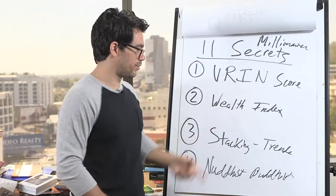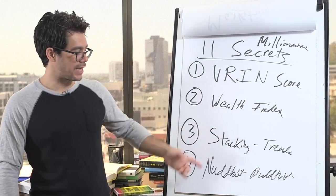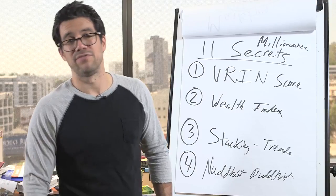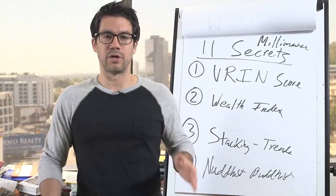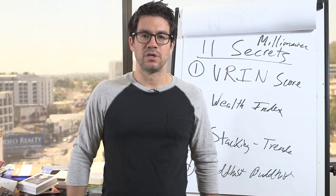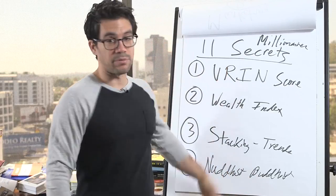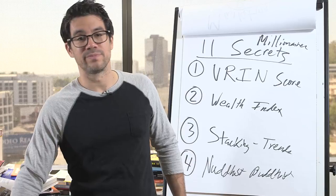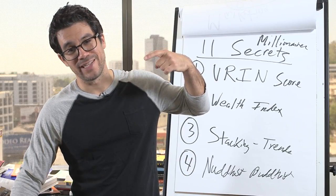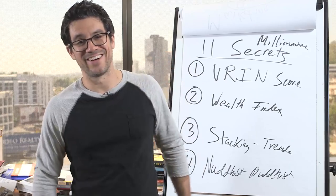So check it out. We'll be talking on VRIN wealth index, accumulation score, stacking multiple trends, nudist Buddhist, and lots of other stuff. Seven more things at the minimum. Alright. So click the link and I will see you on my talk. We'll be talking all these in depth. Alright. Cool. Oh, and subscribe to my channel. I'm always supposed to add that. My video guys say to do that. Alright. Talk to you soon.